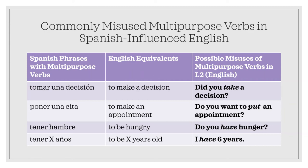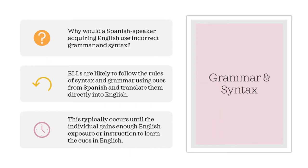Another mistake children might make with multipurpose verbs is translating the Spanish verb 'tener' to the English verb 'to have' instead of the correct English equivalent 'to be.' A child might ask 'do you have hunger' rather than 'are you hungry,' or say 'I have six years' rather than 'I am six years old,' because they are directly translating the way they would use 'tener' in Spanish. Grammar and syntax also present problems because there are a number of syntactic operations that differ in English and Spanish, all of which are subject to forward transfer — the application of knowledge from one's native language in the acquisition of their second language — typically until the individual gains enough English exposure or instruction.